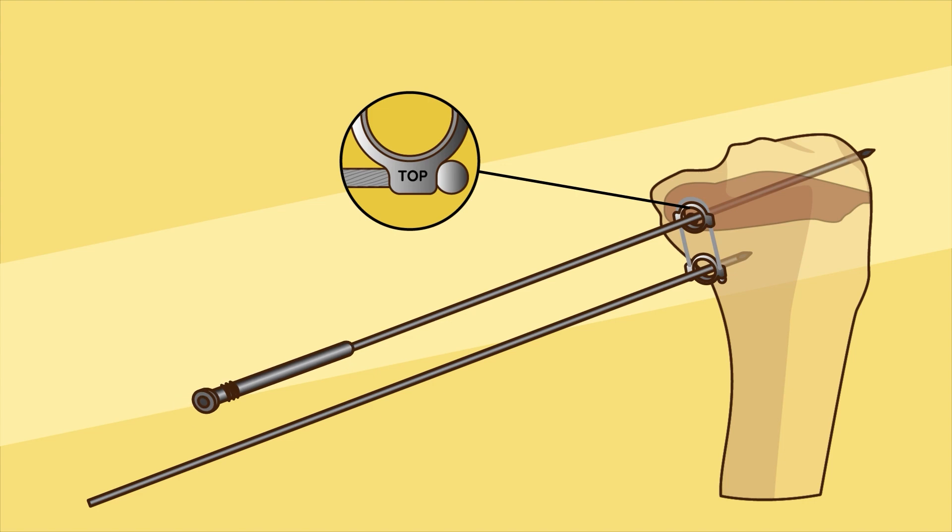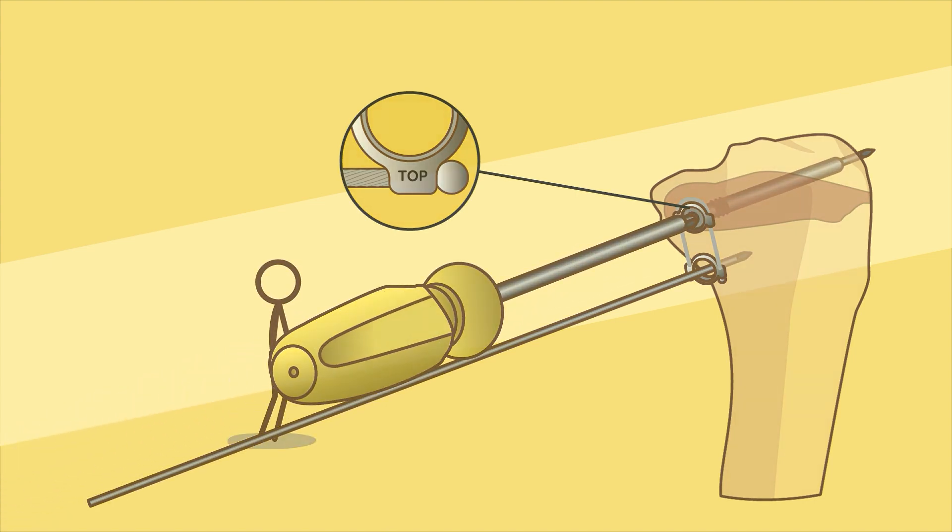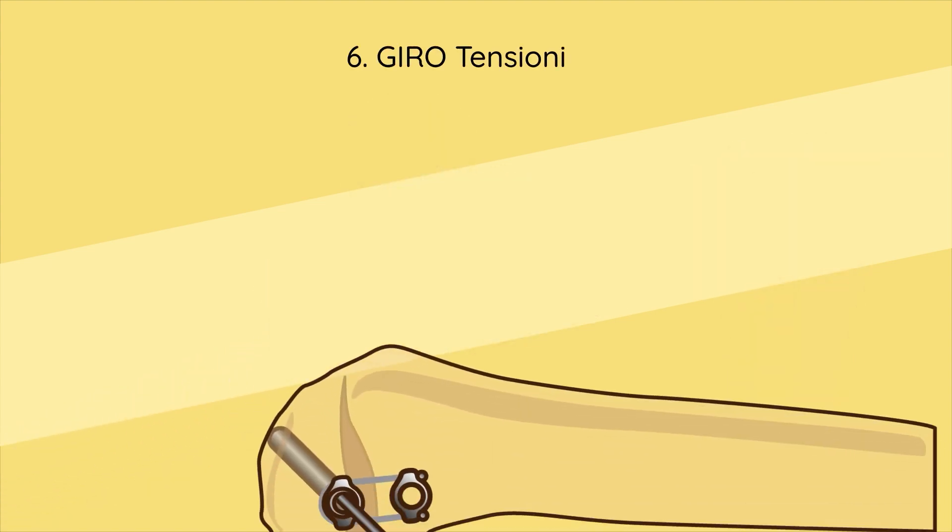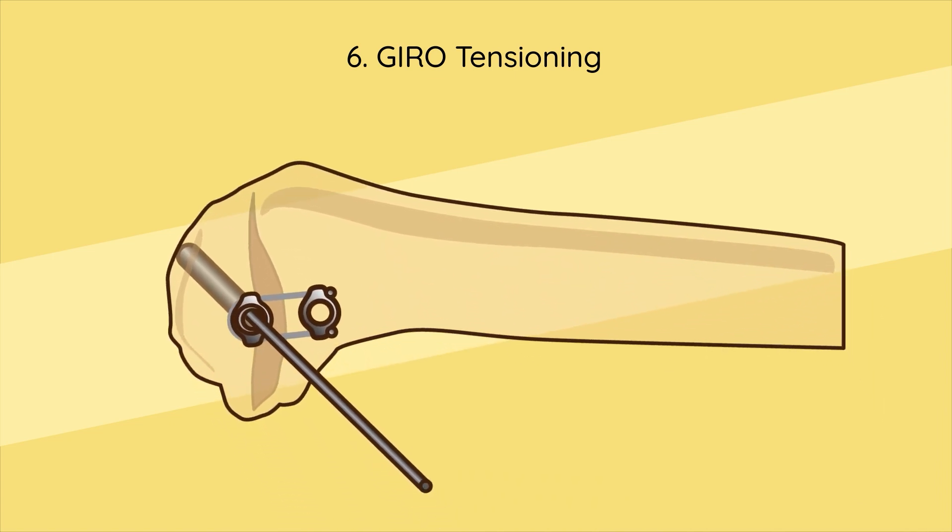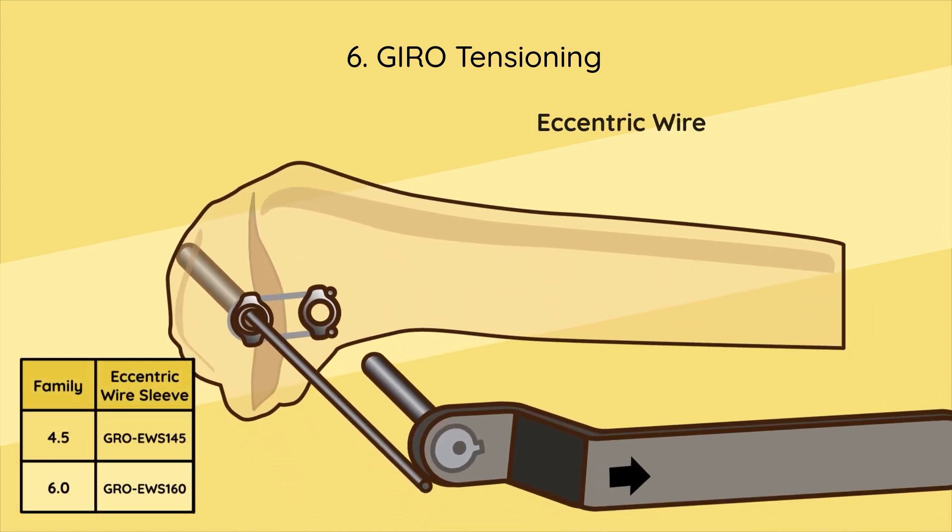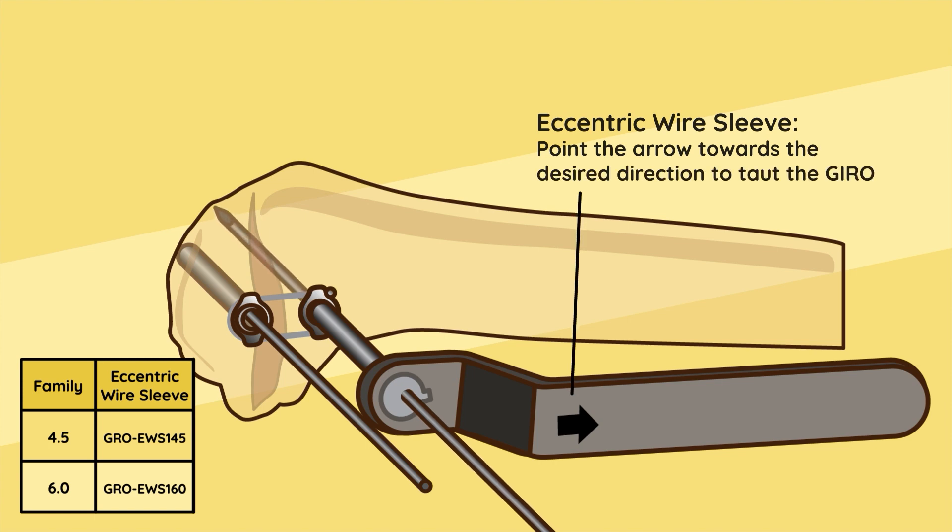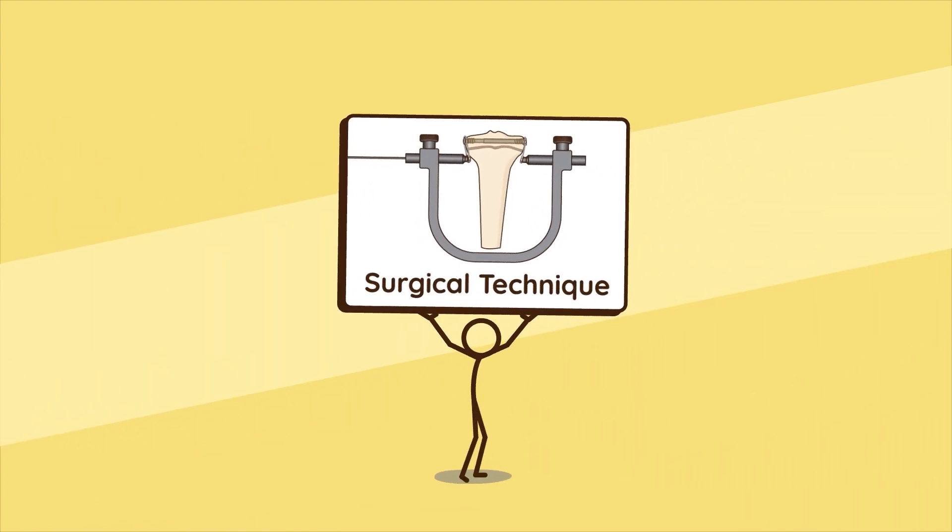Step six - gyro tensioning: Two options are available for this step. One: use the appropriate eccentric wire sleeve to insert the guide wire with an offset. Two: use the horseshoe guide. Refer to the surgical technique for details.